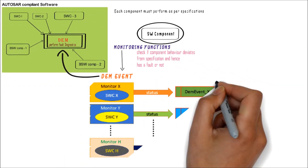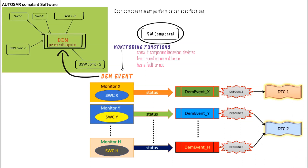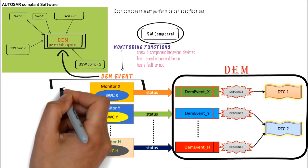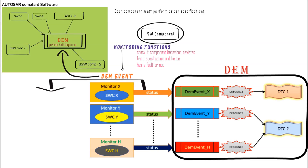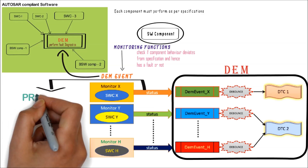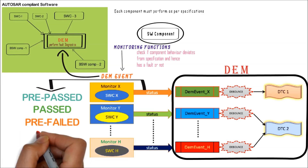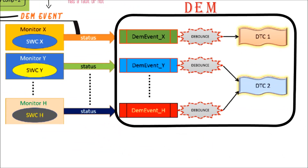Software components in the ECU will have their own monitoring functions and report the status of the functionality to DEM. The status of the monitoring functions can be one of four statuses: pre-passed, passed, pre-failed, and failed. As the monitoring functions report to the corresponding DEM event, DEM would perform debouncing if configured, and report the status to the DTC linked to that DEM event.